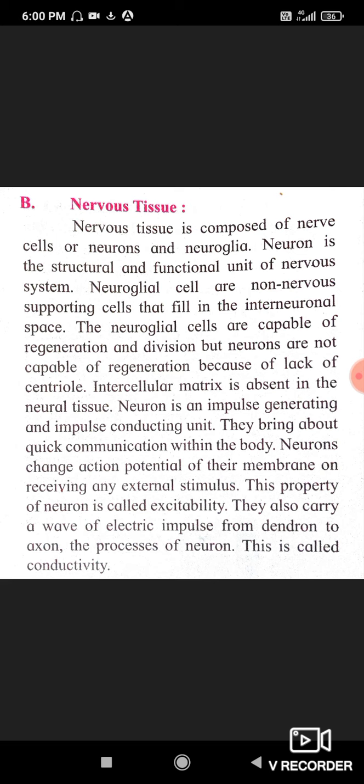Nervous tissue दो प्रकार के cells से बना हुआ होता है — एक nerve cells, जिन्हें neurons बोलते हैं, and दूसरी जो cells हैं वो हैं neuroglia या neuroglial cells.